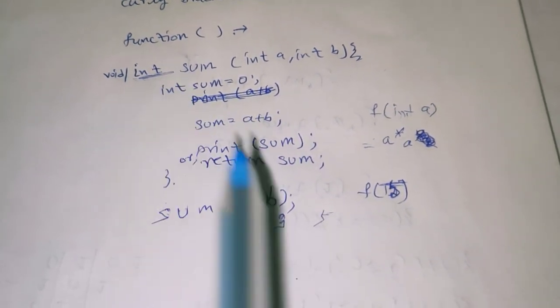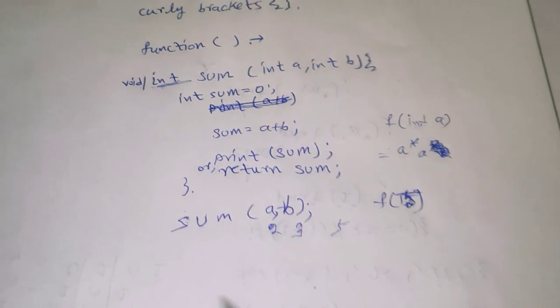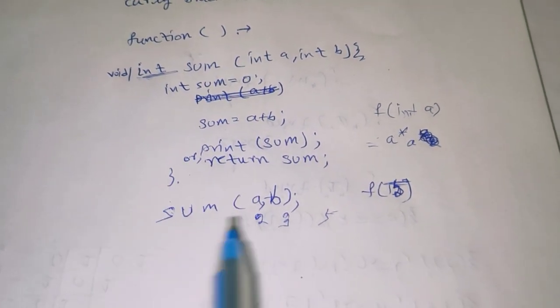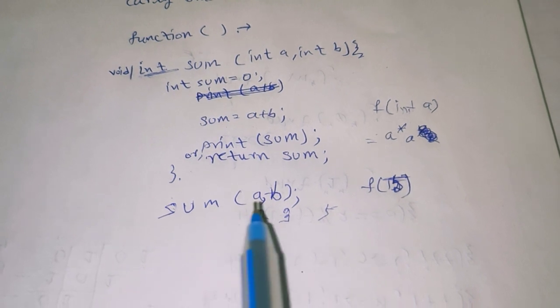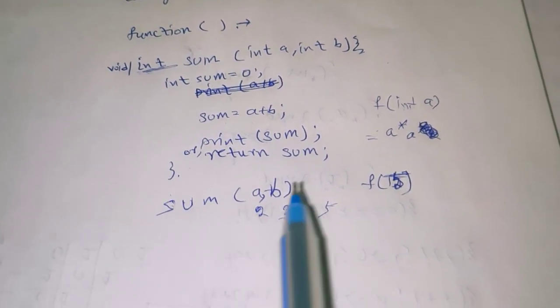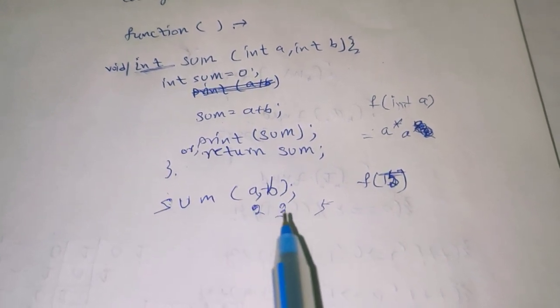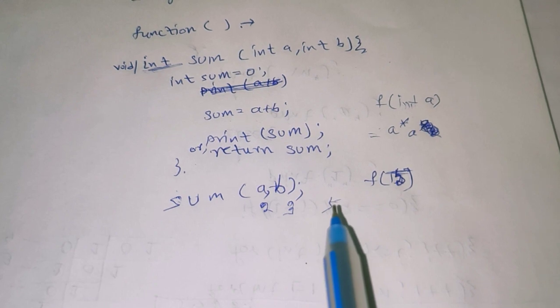If we are using boolean, then we should return true or false. This is our function body. And here we are showing how we can declare and call a function. This is sum(a, b), where we can use 2 and 3, so this will be answered as 5.